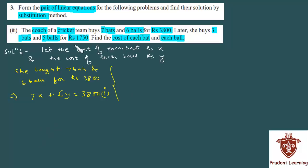Similarly, one condition is given. She also bought 3 bats and 5 balls for which she has to pay Rs. 1750. So the condition is written: 3 times the cost of each bat which is x plus 5 times the cost of each ball which is y, and the total paid is 1750. This is your equation.